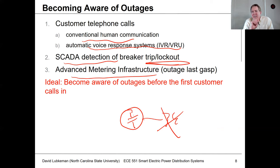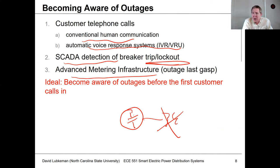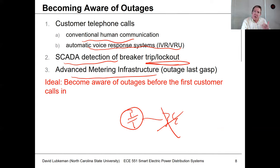Ideally, the utility would want to know customers are out before the customer even has to call in. We're not quite there yet, but smart meters are getting us to the point where we'd actually know when customers are out before they call. When they do call, we should really be able to say: we know you're out of service, and here's how long it's going to take to get you restored.